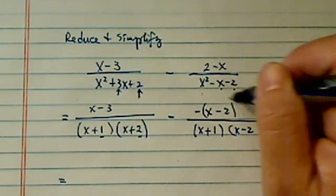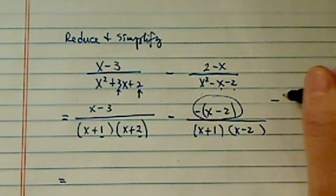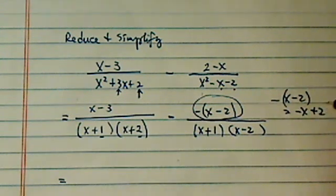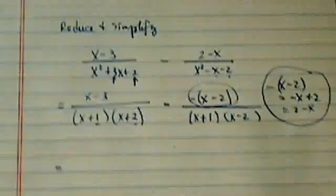So once again, all I did over here is pull the minus sign here. So minus x minus 2 is equal to minus x plus 2, which is exactly 2 minus x. So all I did is rewritten it.